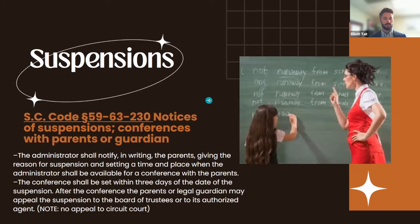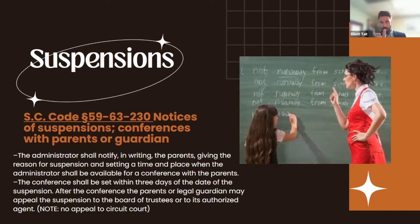An important thing people ask about is: what kind of notice and appeal rights do I have? The administrator — typically the vice principal — has to notify parents in writing, setting forth the reason for the suspension, and give a date and time within three days to have a conference. They'll send an email or letter home saying, 'We suspended your kid for three days for fighting,' citing the code of conduct. If you're not available at the scheduled time, the school isn't technically required to reschedule — most probably will, but they've checked their statutory boxes.